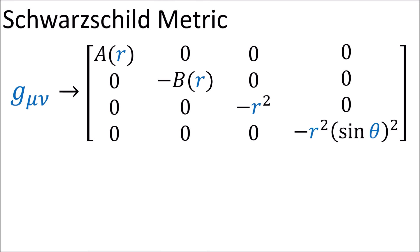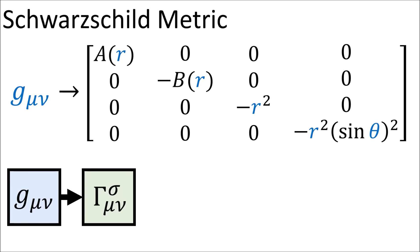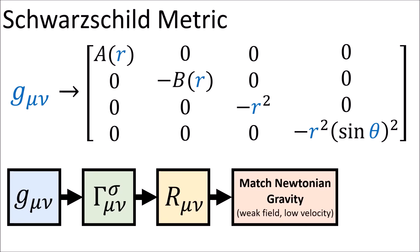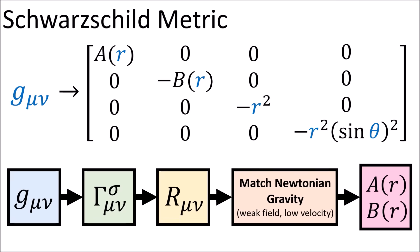So we've simplified the form of the metric as much as possible. In order to solve for a(r) and b(r), we'll calculate the connection coefficients, calculate the Ricci tensor components, and then force the metric to give us the results of Newtonian gravity in the limit of low velocity and weak gravity. This will give us the Schwarzschild metric. So let's start by calculating the connection coefficients.